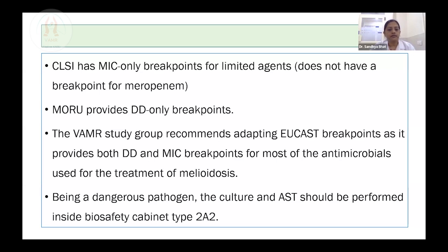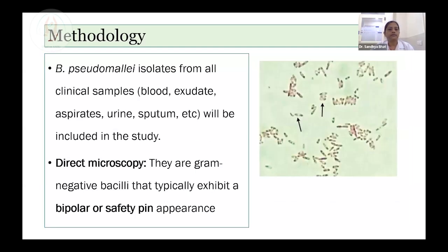As melioidosis pathogen Burkholderia pseudomallei is dangerous, we strongly recommend all laboratories to use biosafety cabinet type II A2 for culture and sensitivity testing. The inclusion will be all clinical isolates of Burkholderia pseudomallei from blood, exudate, aspirates, urine, and sputum. For identification, from positive blood culture growth or other clinical specimens, typical bipolar staining gram-negative bacilli appearance gives strong suspicion of Burkholderia pseudomallei.